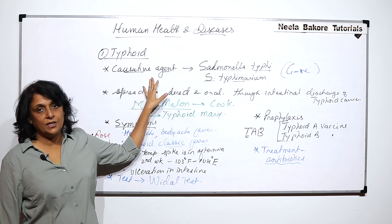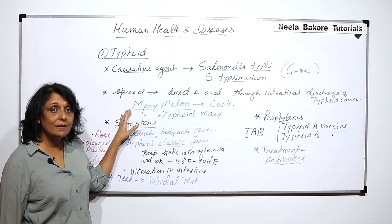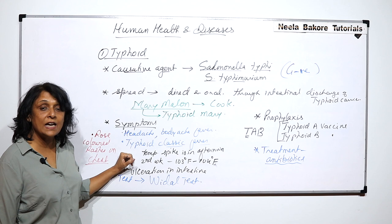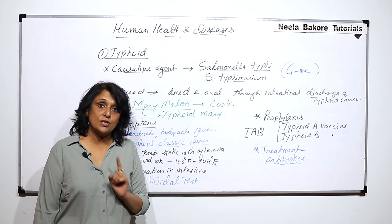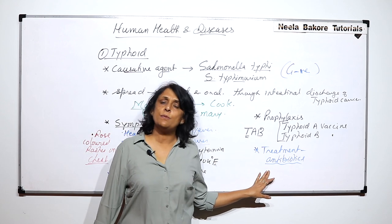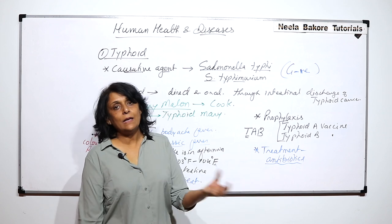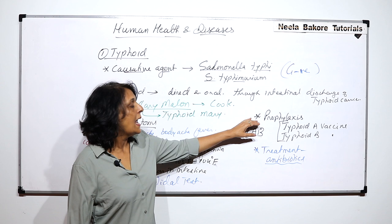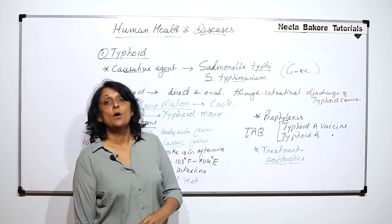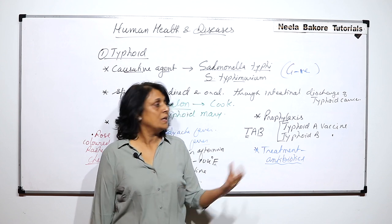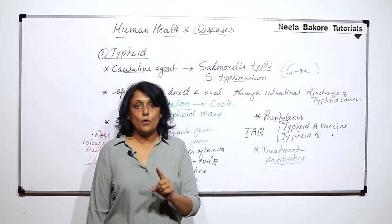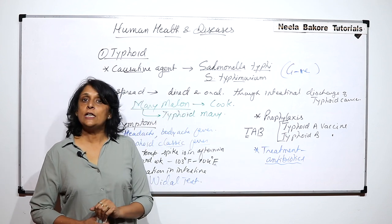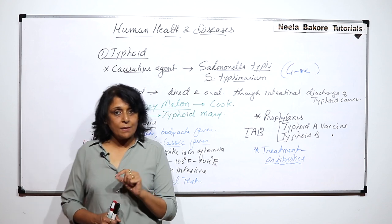To recap: the causative agent is Salmonella typhi, a bacterium. It spreads as illustrated by the story of Mary Mallon — Typhoid Mary. Key symptoms include the classic typhoid fever pattern and rose-colored rash on the chest. Treatment is antibiotic, and for most bacterial diseases antibiotics are effective. Prophylaxis is available in the form of the TAB vaccine covering both the A and B strains of Salmonella typhi. In the next part we will take up another disease under the same heads.